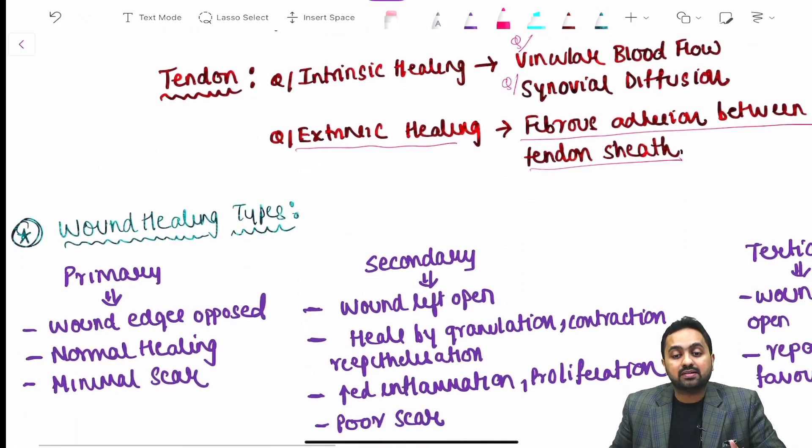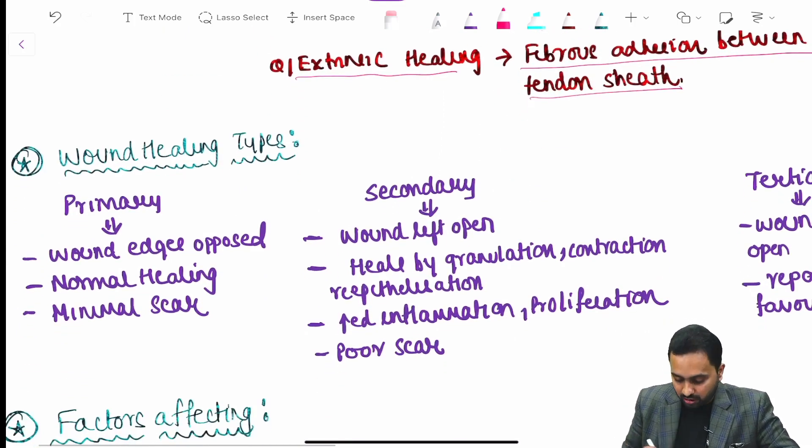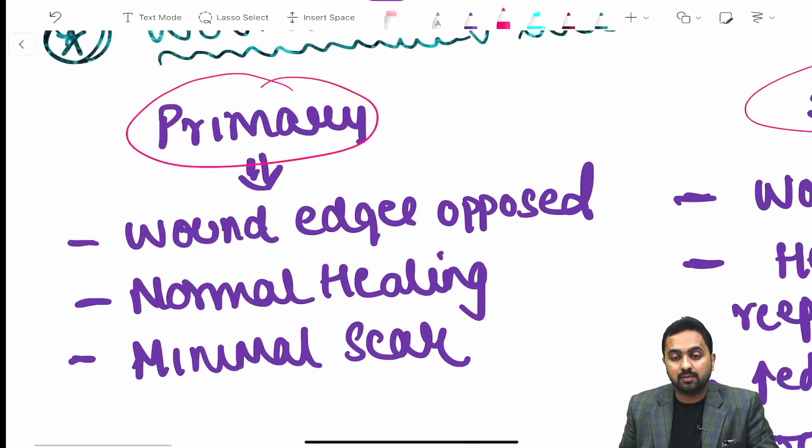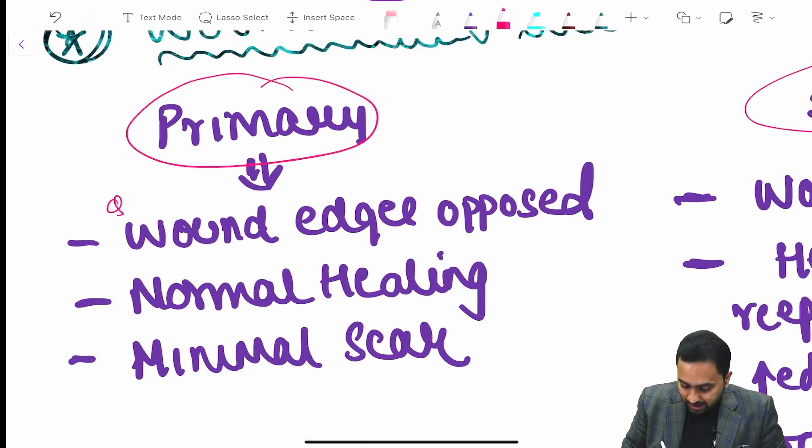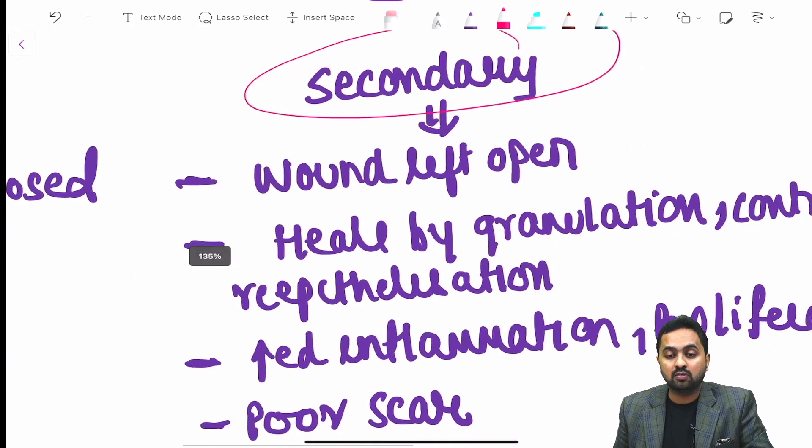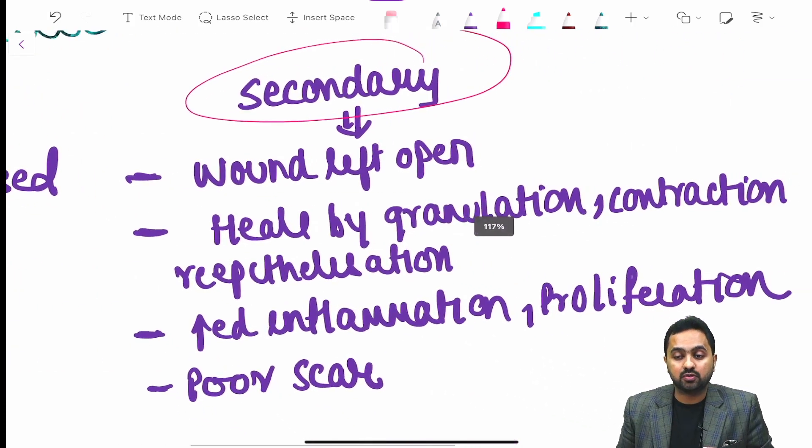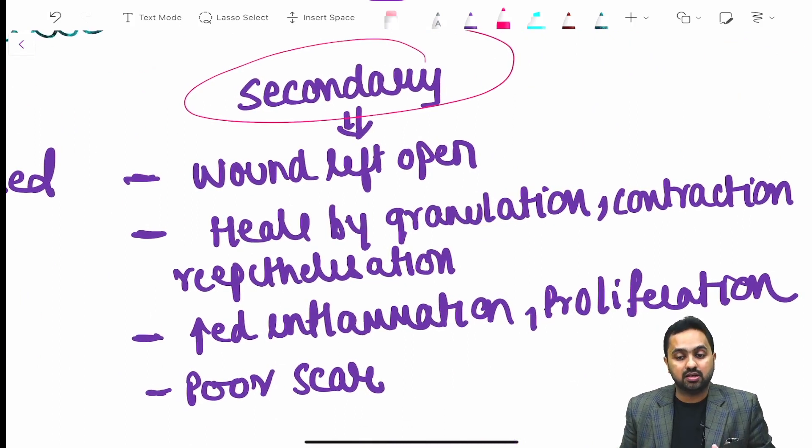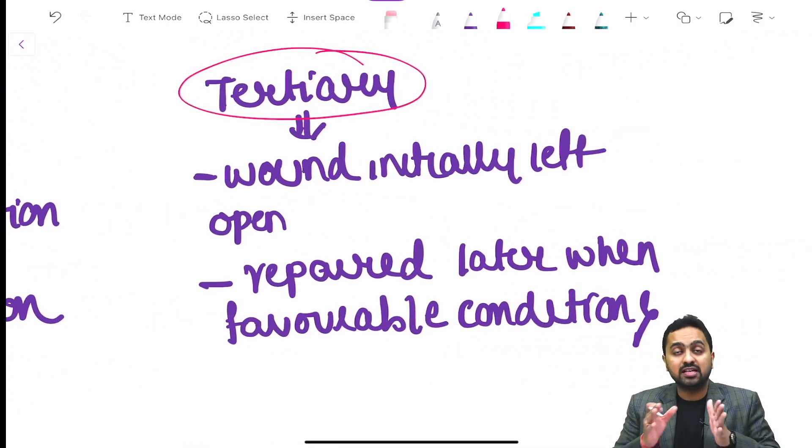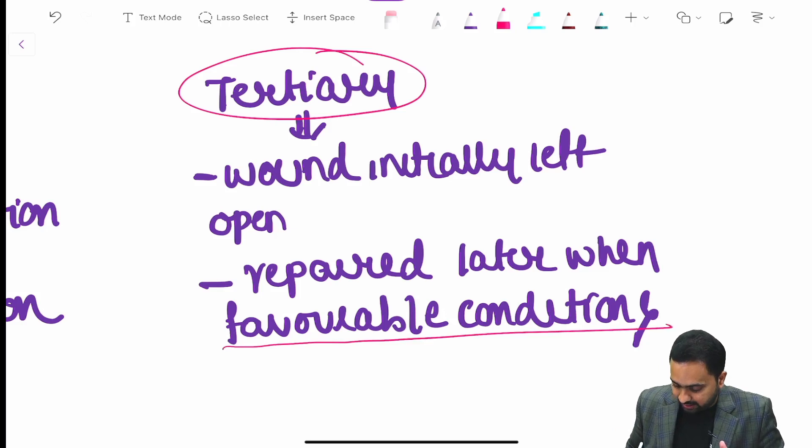The next important concept is the types of wound healing which are your primary, secondary and tertiary. The important points with respect to your primary wound healing are the wound edges remain opposed, it is a normal healing and there is a minimal scar. In contrast, in your secondary healing wound is left open and it heals by granulation, tissue contraction and re-epithelialization. There is increased inflammation and proliferation and it forms a poor scar. In case of your tertiary wound healing wound is initially left open and then later a secondary closure is done when there are favorable conditions.